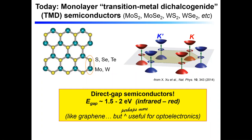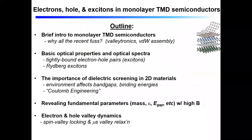I have to be a little careful how I say this so I don't annoy my colleagues who work with graphene, but I think it's okay to say that these materials are like graphene, but perhaps more immediately obviously useful for certain applications in optoelectronics like photovoltaics or light emitting diodes.